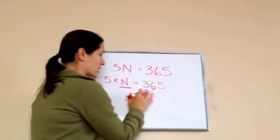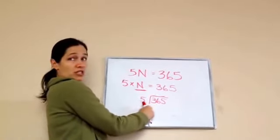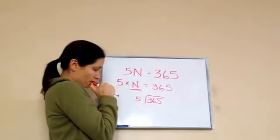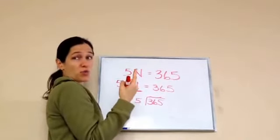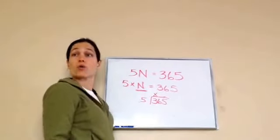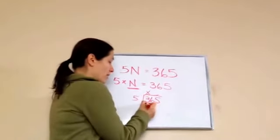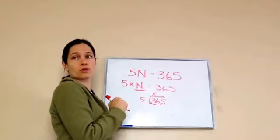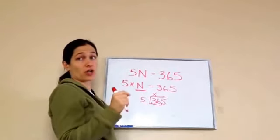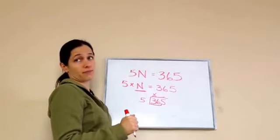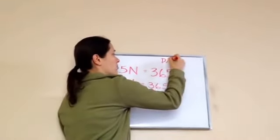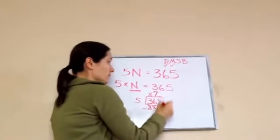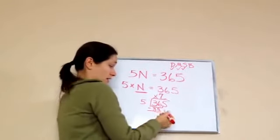So let's figure out what N is. We're going to look at the first number: can 5 times something equal close to 3 without going over? 5 times 1 gives us 5 — already gone over. So that means it doesn't work; put an X there. So now we're going to take 3 and 6 — 36. 5 times what equals 36? 5 times 6 is 30, 5 times 7 is 35, 5 times 8 is 40 — so 5 times 7. Divide, multiply: 7 times 5 is 35. Subtract: 36 take away 35 gives us 1 left. Bring down.